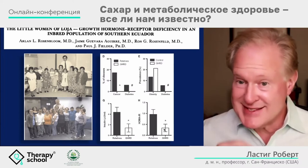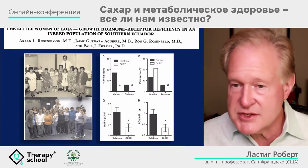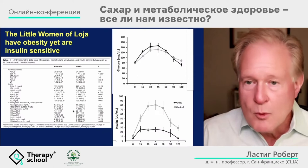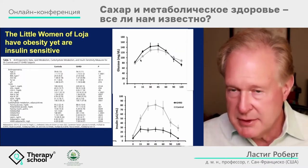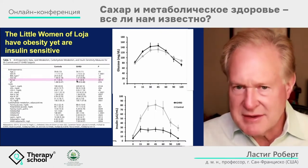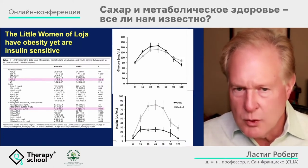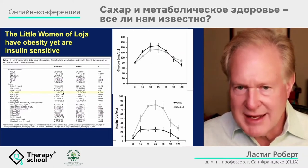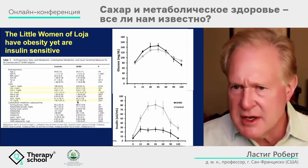Their insulin levels are much lower, their insulin resistance is much better — they are insulin sensitive. Their glucose tolerance is the same as wild-type relatives, but their insulin response is much lower despite being obese. Their percent fat is higher — 47.7% versus 41.1% — but their fasting insulin is one-third as high: 4 versus 14. Their HOMA is much better. Their HDL is much higher and triglycerides much lower.